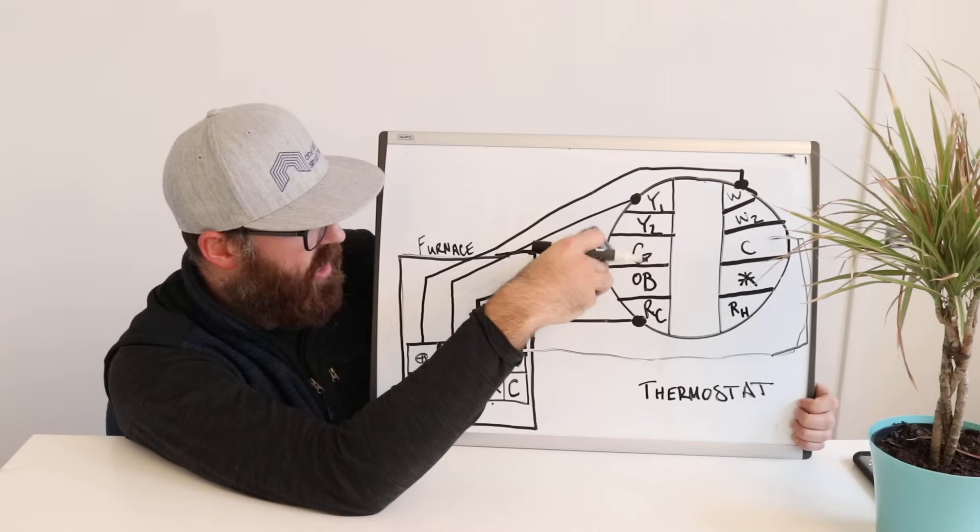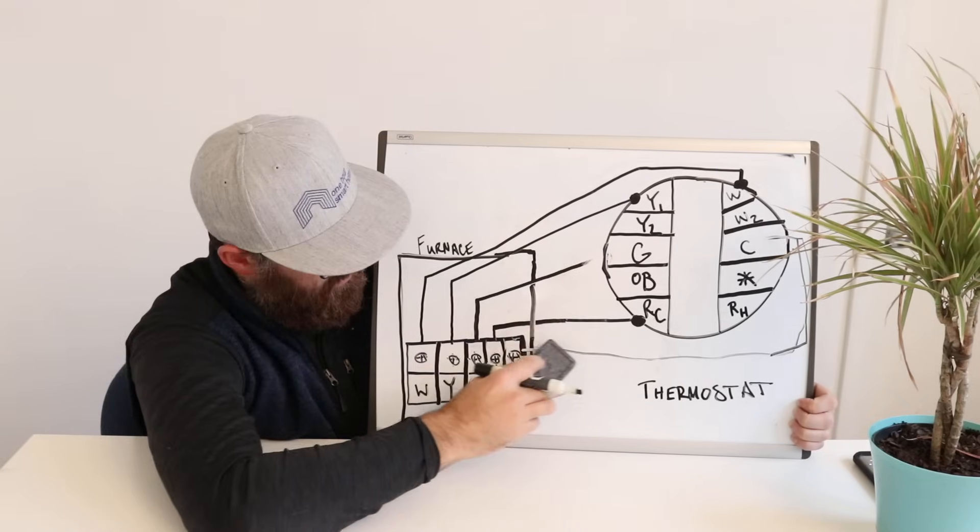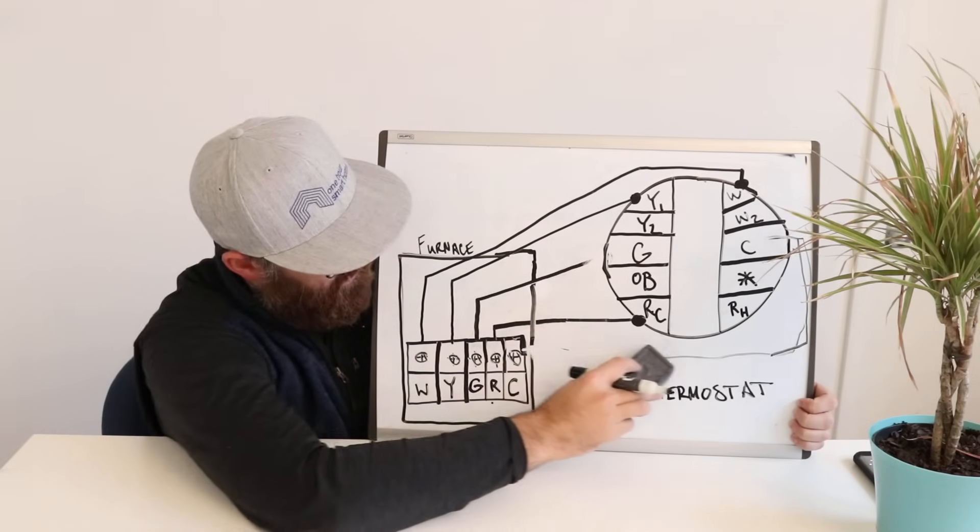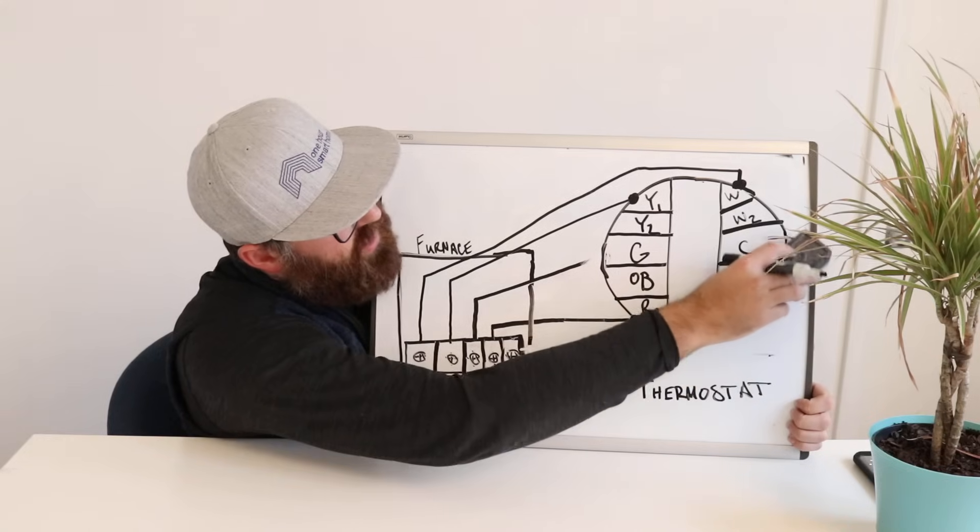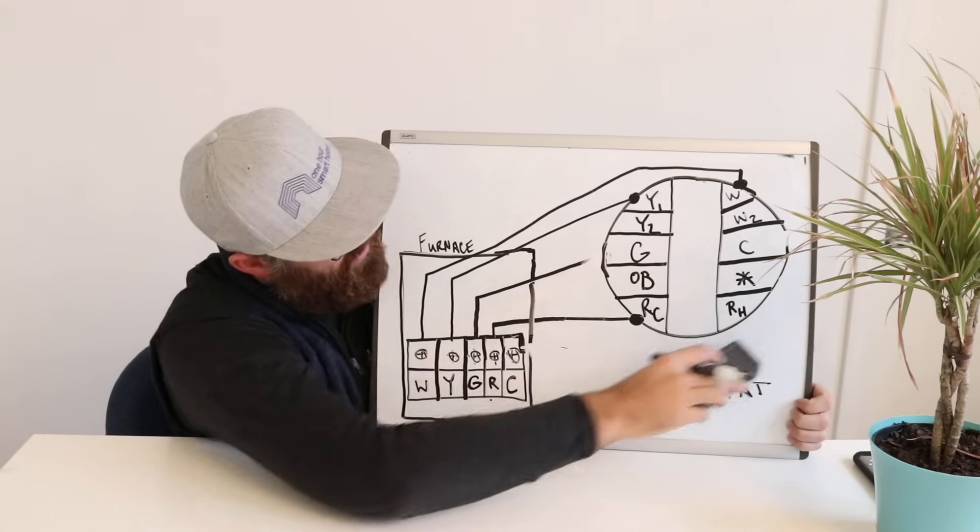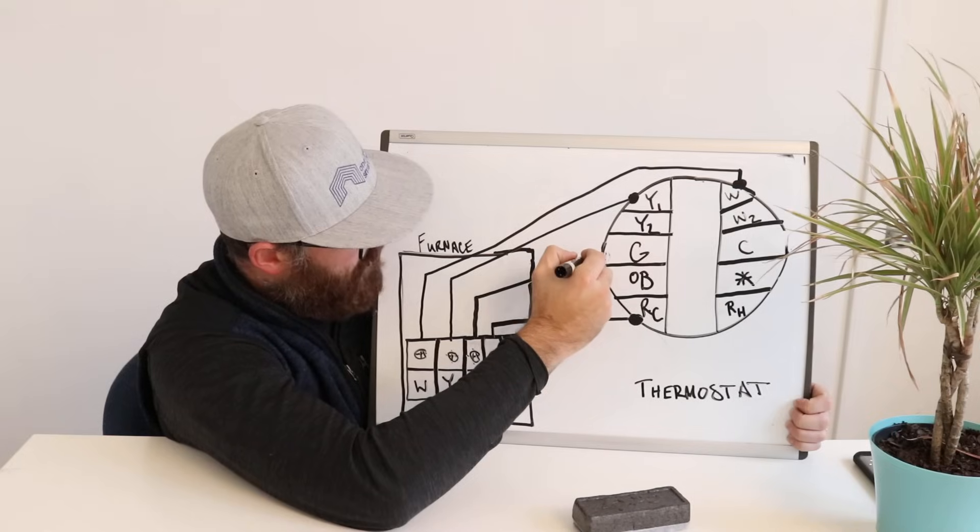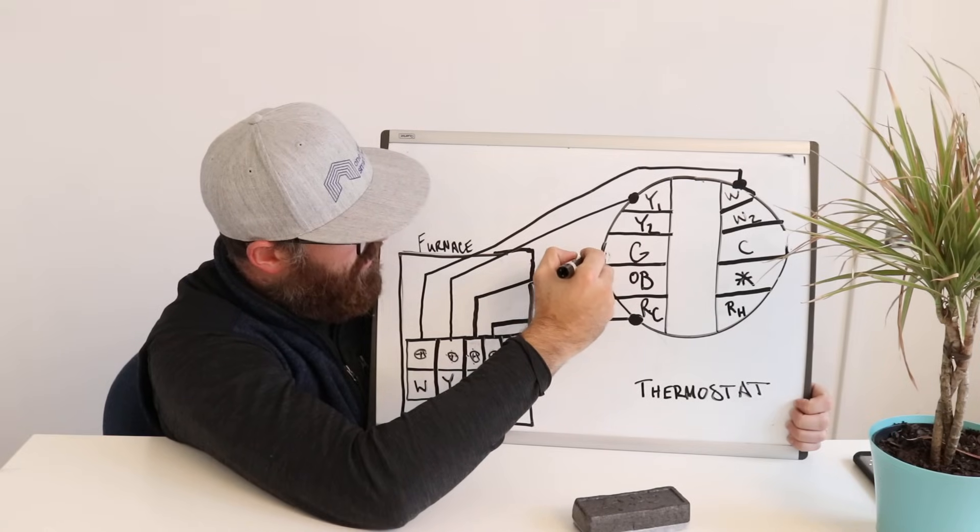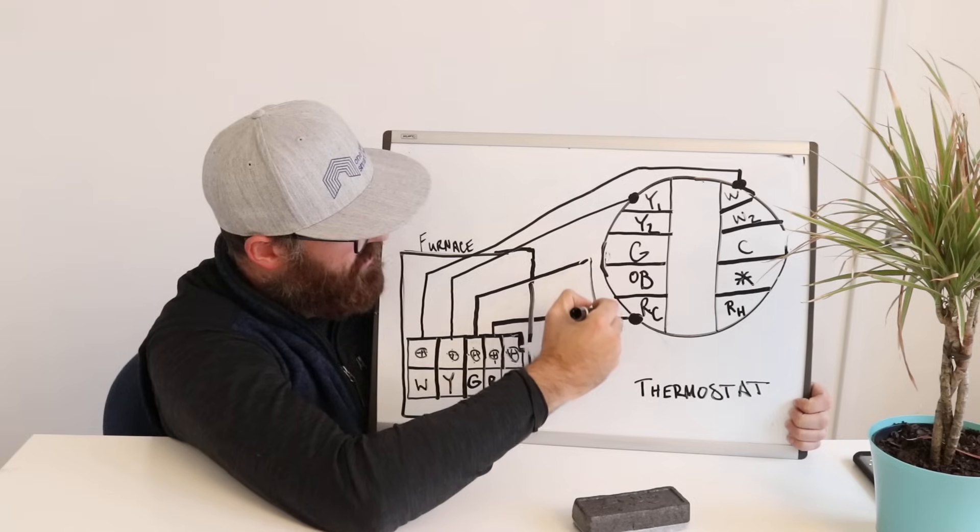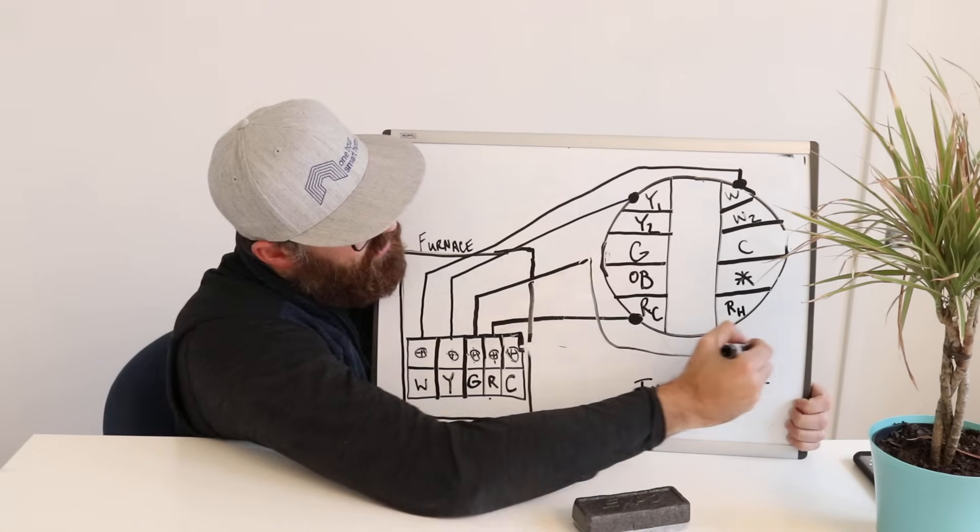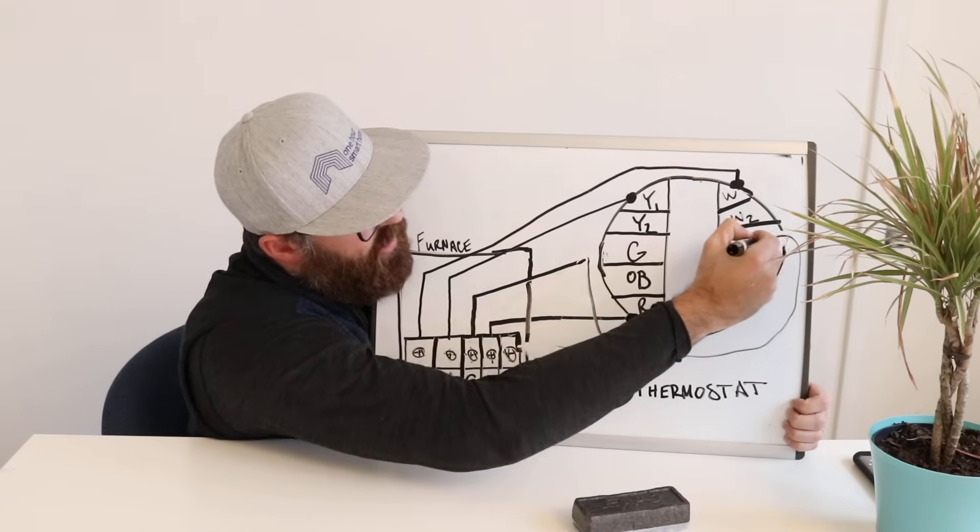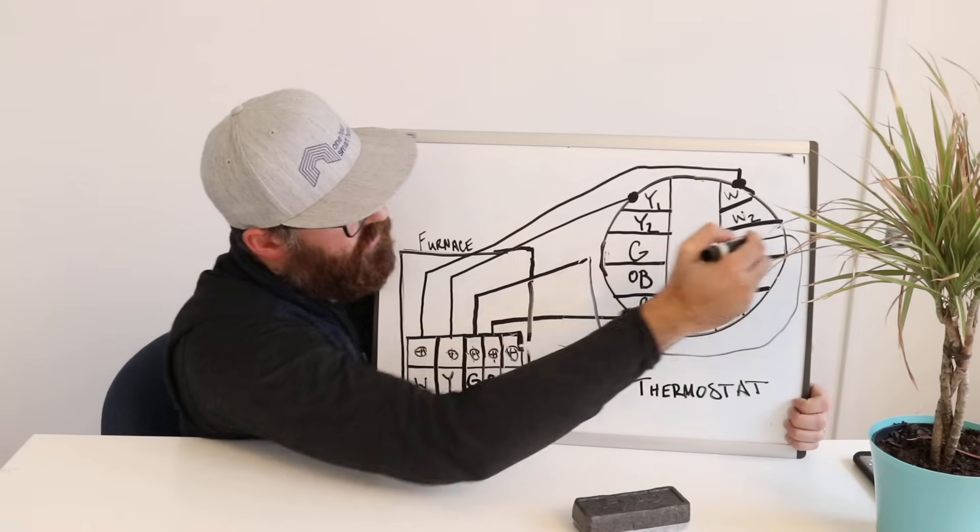So, what you do is you take that G wire. So it's running right here now to the G, we take it, and instead of connecting to the G, we're going to take it inside the thermostat, and we're just going to move it over, and we're going to connect to the C wire.